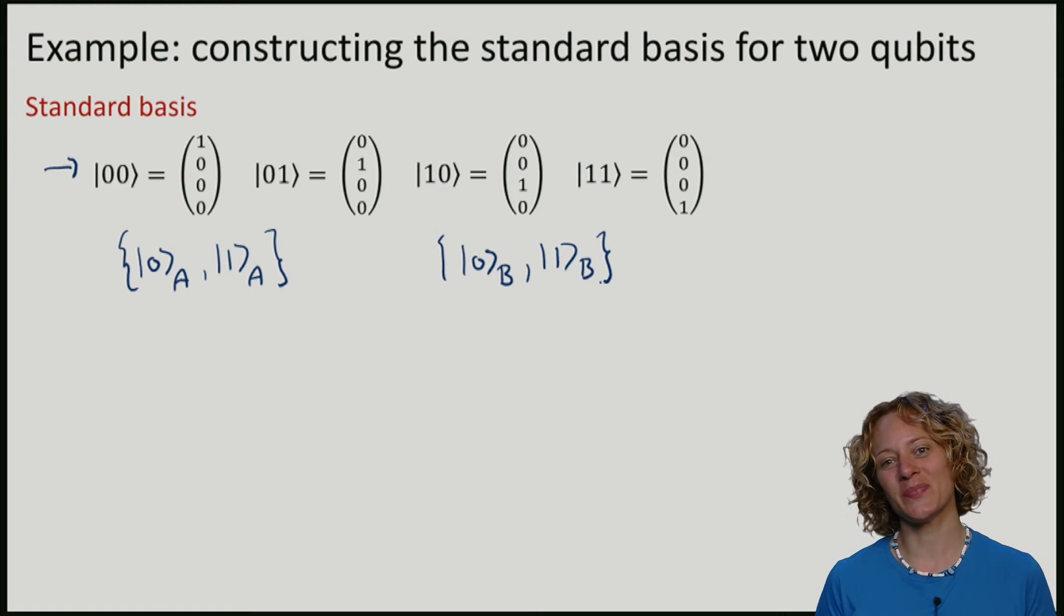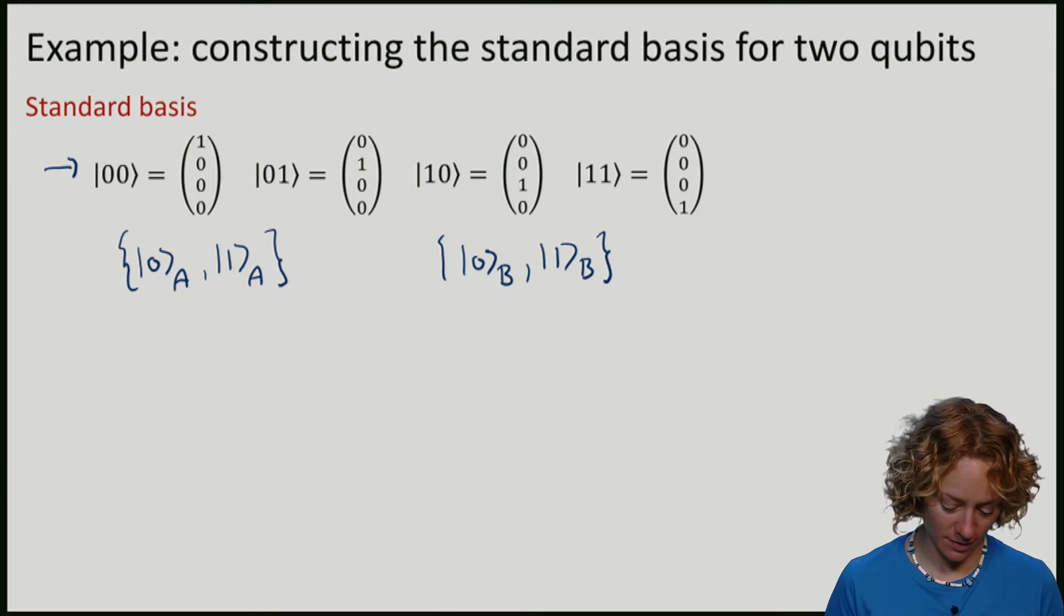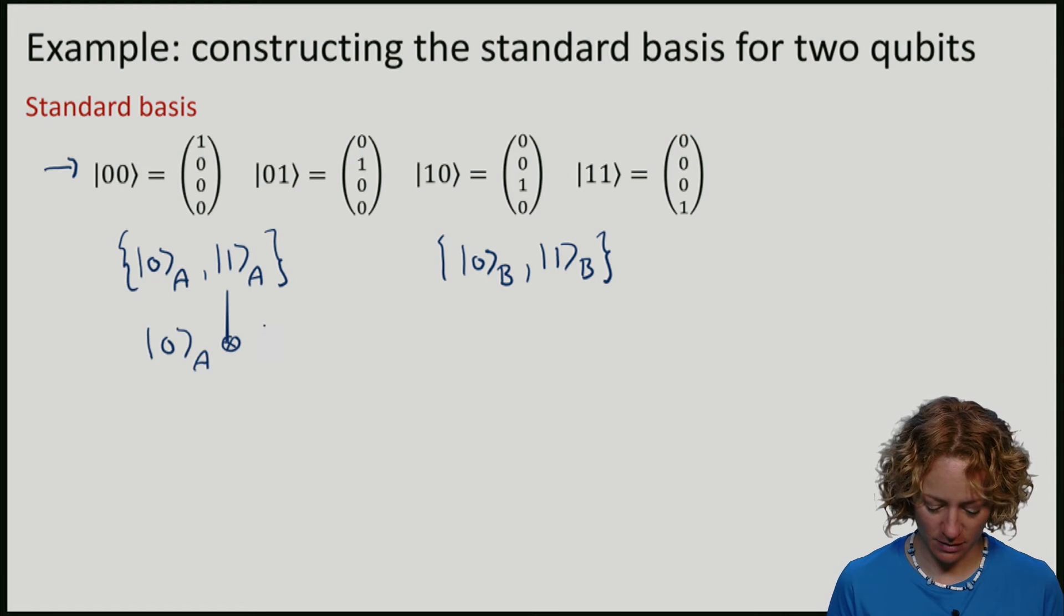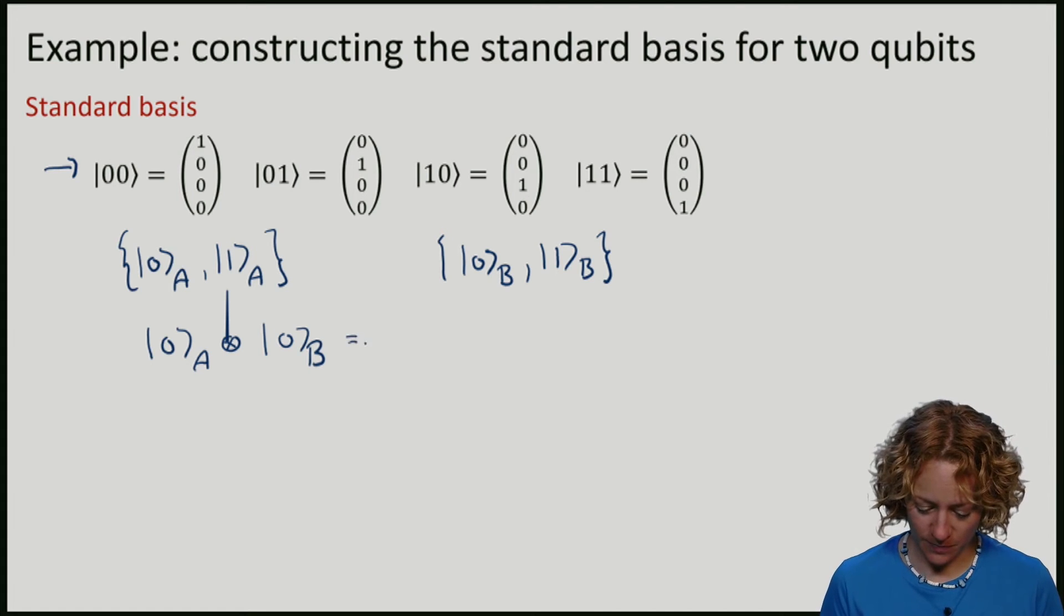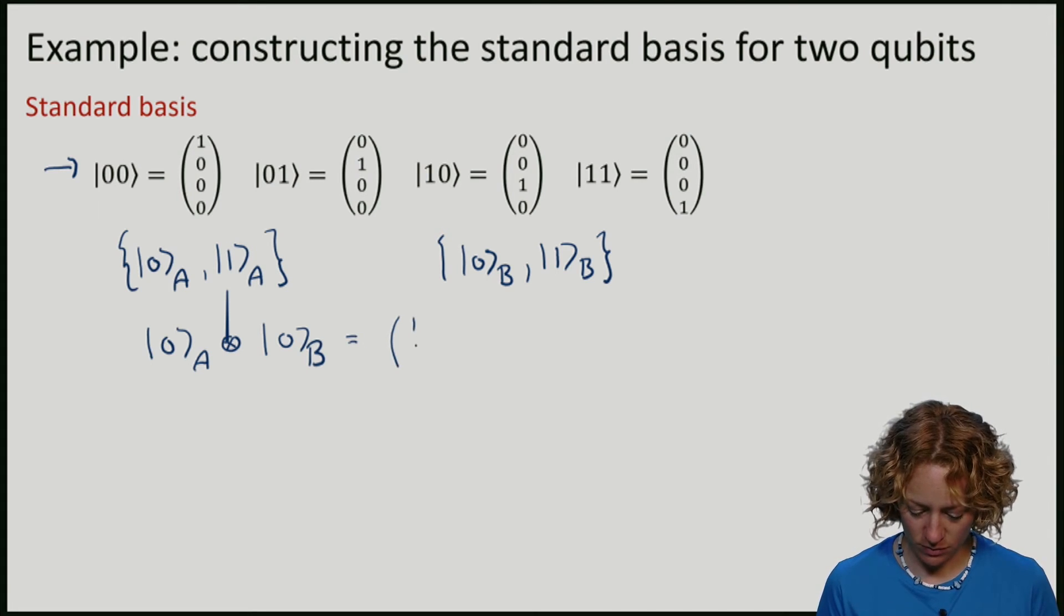We can now form the standard basis for two qubits by taking the tensor product of the basis elements. So let me do that, I take the tensor product of a with b. So what is this tensor product? It is 1, 0 on a, 1, 0 on b.